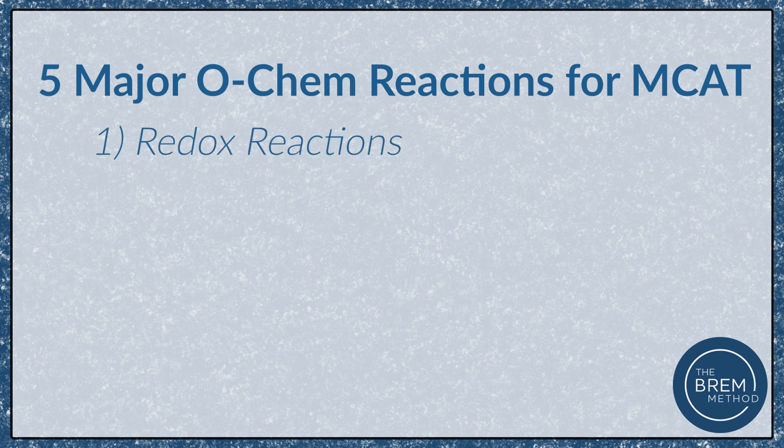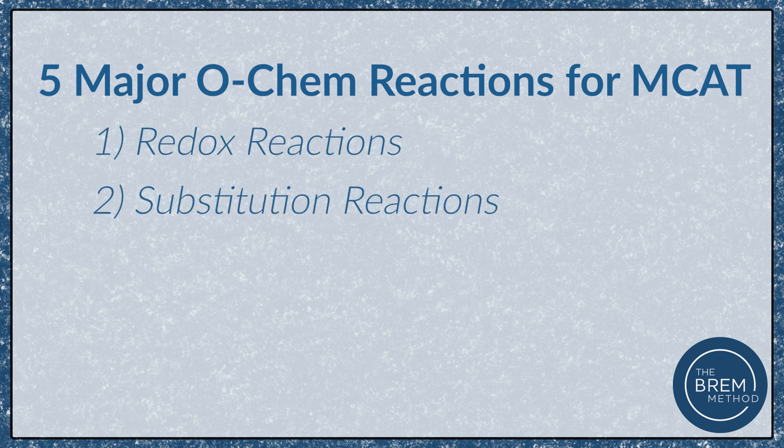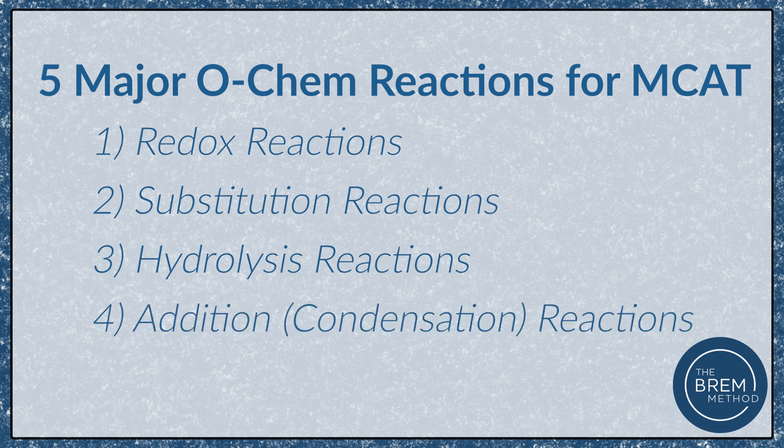Hey there pre-med! In this video we're going to talk through simplifying organic redox reactions, which is one of the five major reaction types you need to know for organic chemistry on the MCAT. Those five reaction types are: number one redox reactions, number two substitution reactions, number three hydrolysis reactions, number four addition or condensation reactions, and number five isomerization reactions. Today we're going to go through type one: redox reactions.